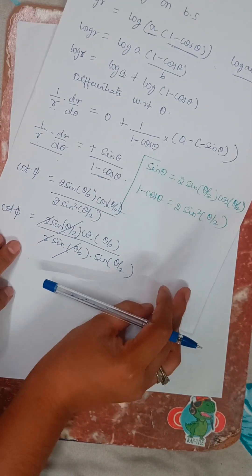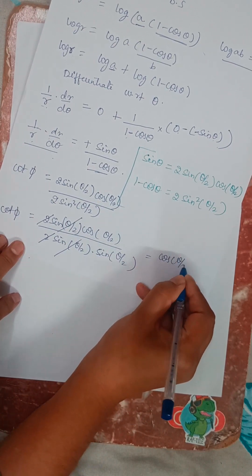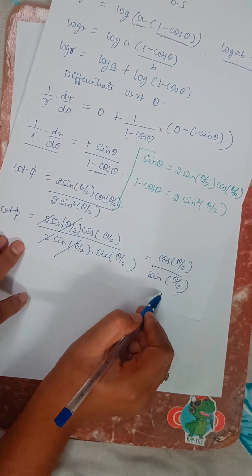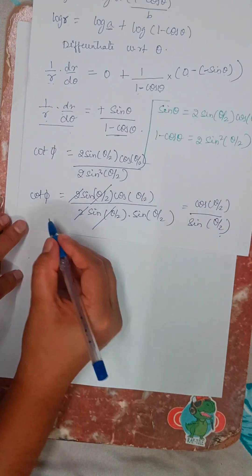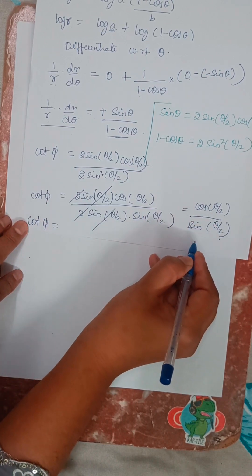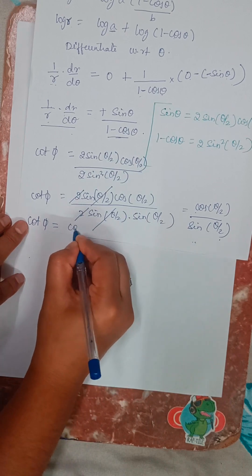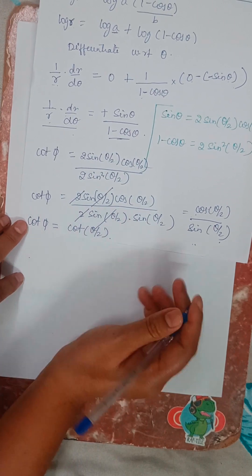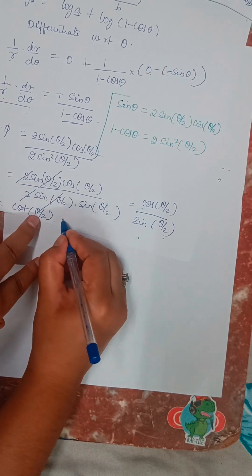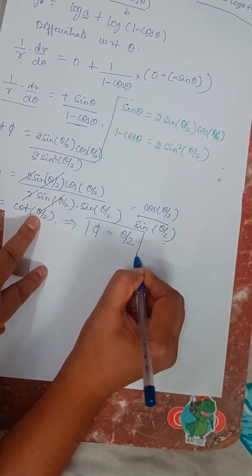This gives cos(θ/2)/sin(θ/2), which is cot(θ/2). Therefore cot φ = cot(θ/2), which means φ = θ/2. Hence proved.